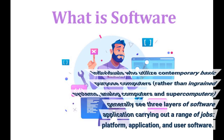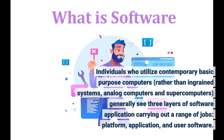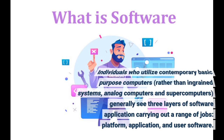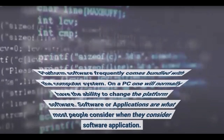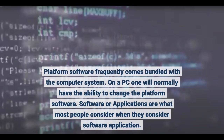Individuals who use modern general-purpose computers — rather than embedded systems, analog computers, and supercomputers — generally see three layers of software performing a range of tasks: platform, application, and user software. Platform software frequently comes bundled with the computer system; on a PC one will normally have the ability to change the platform software. Applications are what most people think of when they consider software.